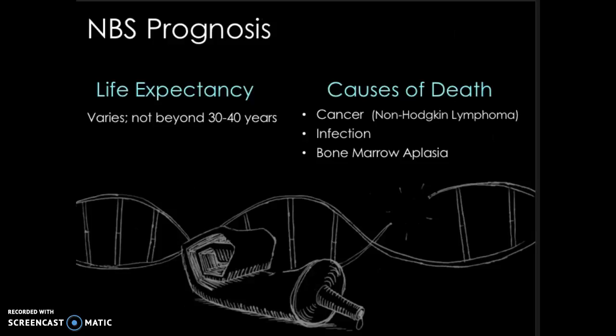Once diagnosed, outlook is pretty poor. Life expectancy varies but does not extend past 30 or 40 years. Cancer, infections leading to renal and liver failure, and bone marrow aplasia are common causes of death — however, cancer is the main culprit. Non-Hodgkin's lymphoma, a cancer of the immune system cells, takes the lives of around half of those with NBS before the age of 15. Brain and muscle cancers are also seen in these individuals.